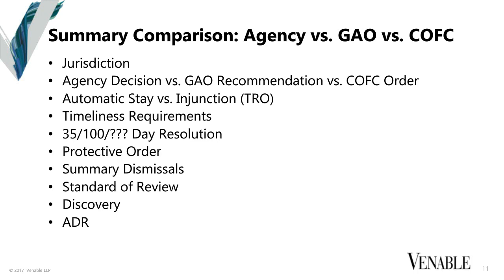With regard to the type of decision you'll get: from the agency, you'll get a thumbs-up or thumbs-down decision. From the GAO, you'll get a recommendation of what the agency should do, and the agency has the ability to disregard it. If you go to the Court of Federal Claims, you'll get an order that the agency has to follow. The best position you can put yourself in from a company perspective is to get the automatic stay, so in most cases that cuts in favor of going to the GAO. If you go to the Court of Federal Claims, you have to make a motion for a temporary restraining order and preliminary injunction, which is a much higher hurdle than the automatic stay provisions at the GAO.